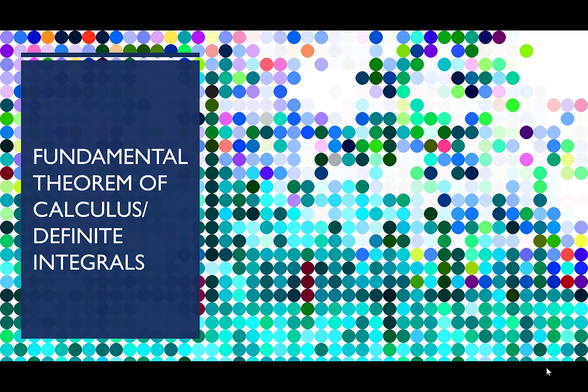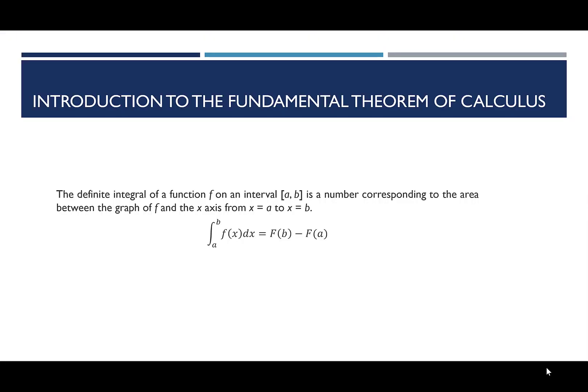Hi everybody. Today we're going to talk about the fundamental theorem of calculus, which is really like looking at definite integrals. Let's start by reviewing what we talked about last time: definite integrals. The definite integral of a function f that is continuous over a closed interval [a, b] is a number that corresponds to the area between the graph of f and the x-axis on this interval from a to b. We write the integral from a to b of f(x) dx equal to F(b) minus F(a).